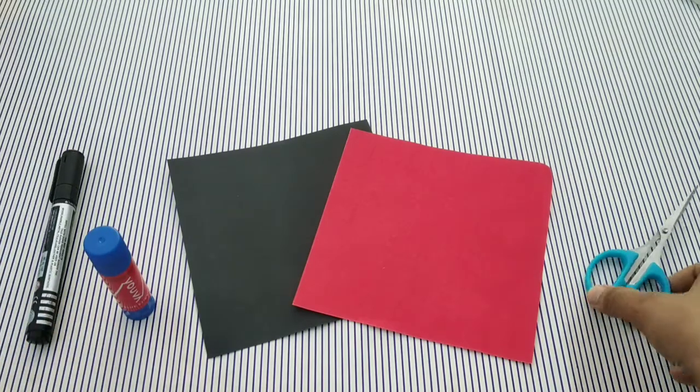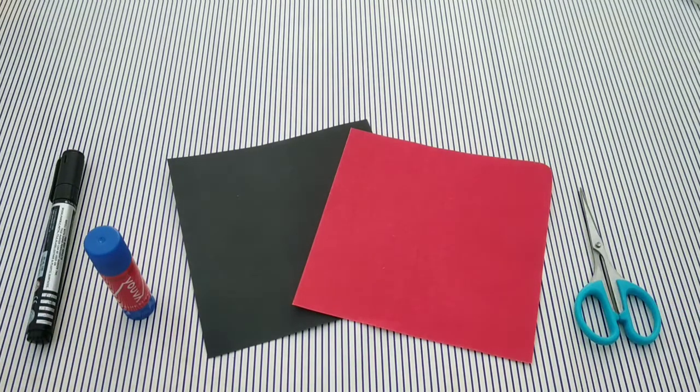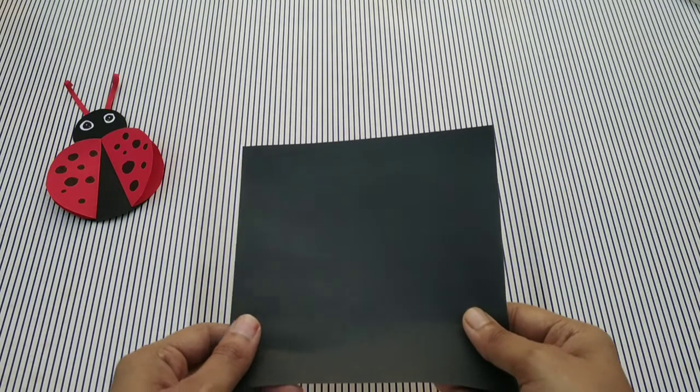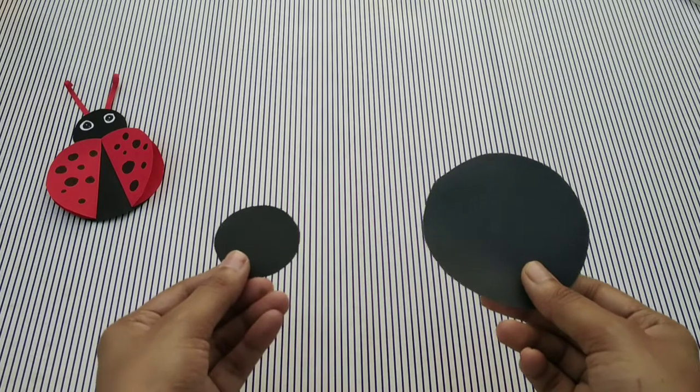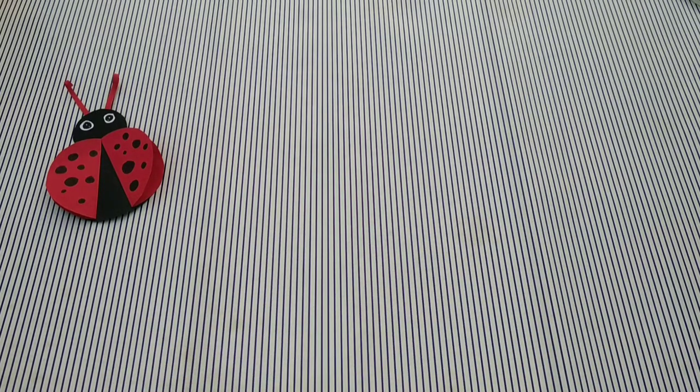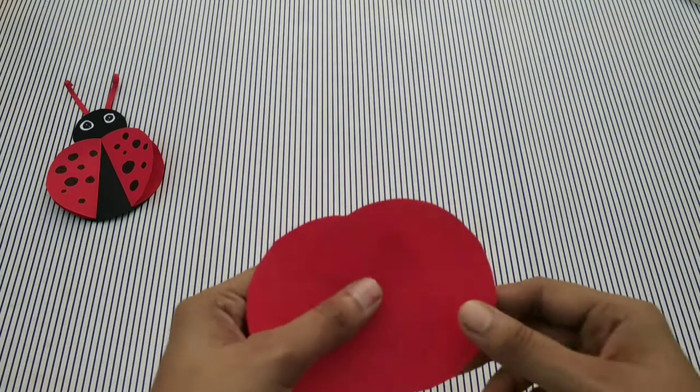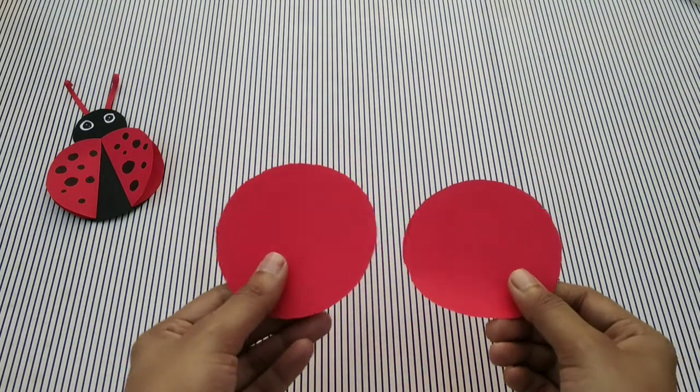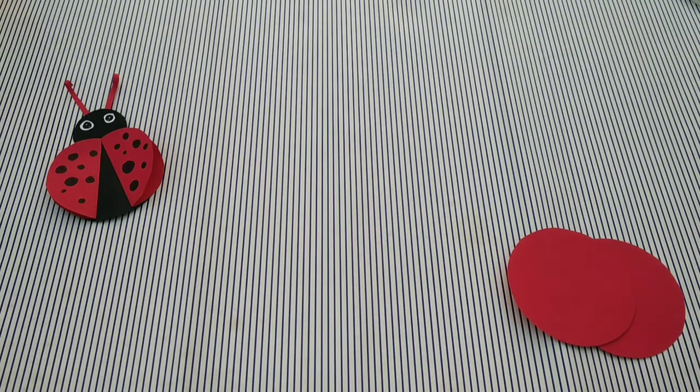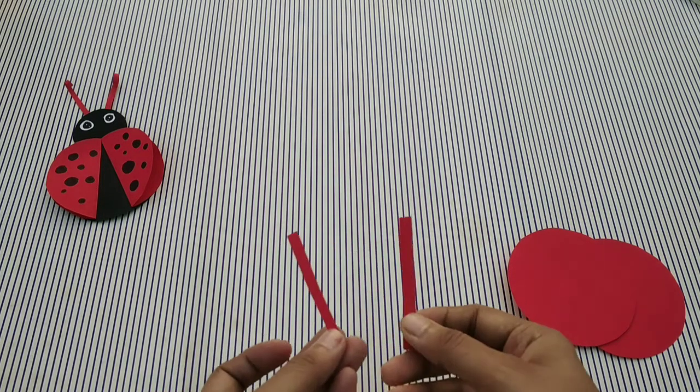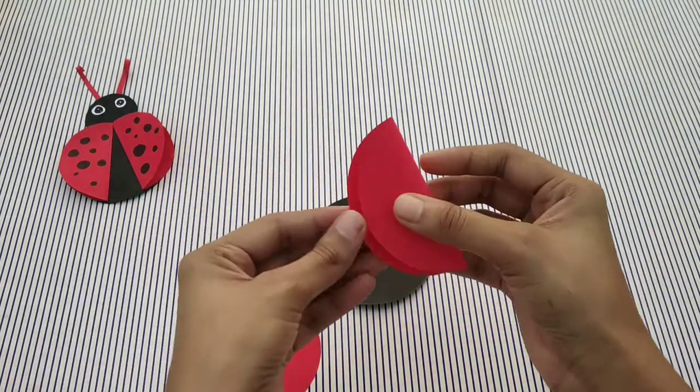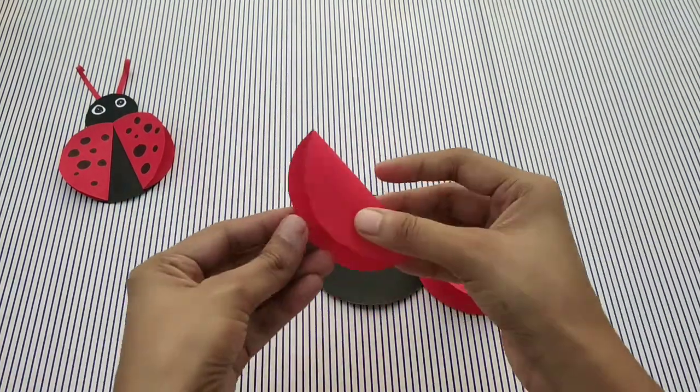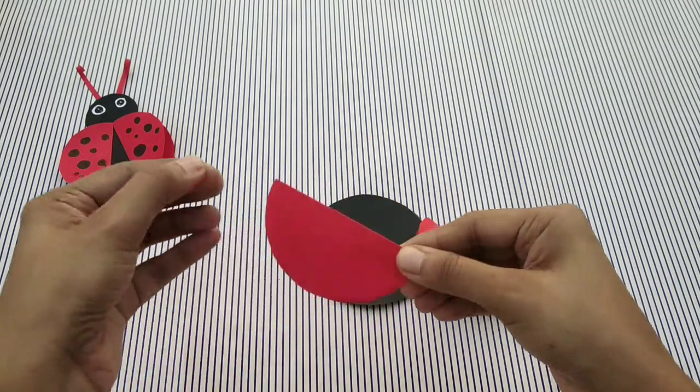From black craft paper, you have to cut two circles, one big and one little bit smaller. From red craft paper, you have to cut two circles of equal size and also two rectangles. Now you have to fold both red papers like a semicircle to make the wings of a bug.